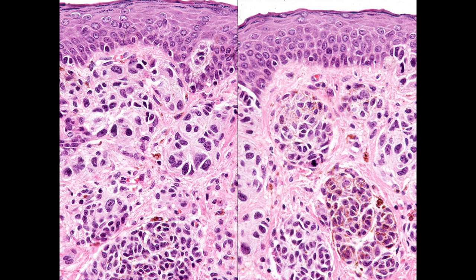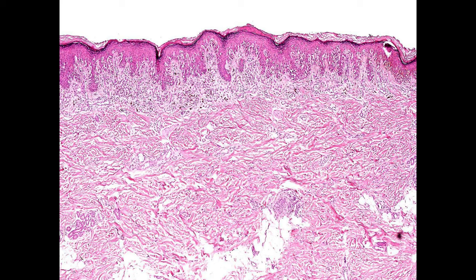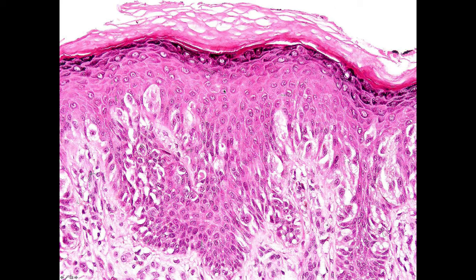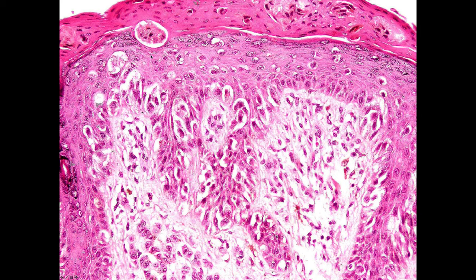Here's a final neonatal example — not such a severe one. You can see it's a compound nevus but the junctional activity is all over the place, not on the tips of the rete ridges where you'd expect it to be. The dermal component appears quite banal. There's a close-up showing marked cytological atypia, and in another view you can see pagetoid spread and severe cytological atypia — but the dermal component is fine.